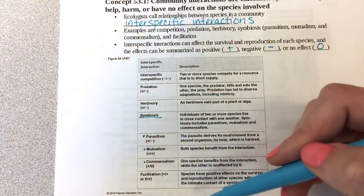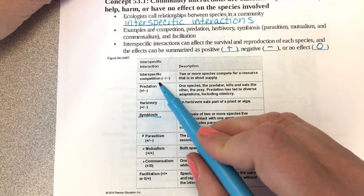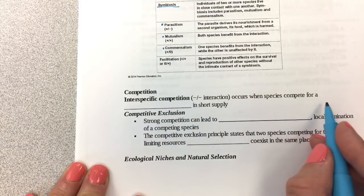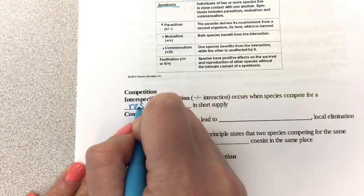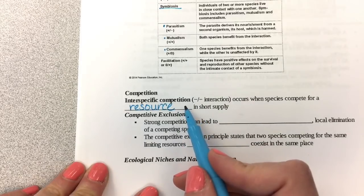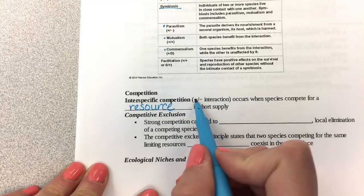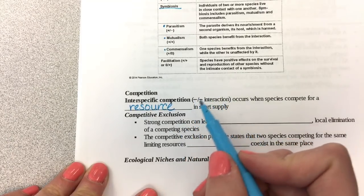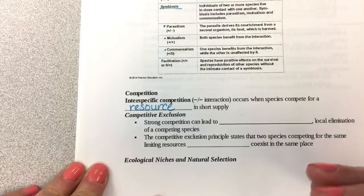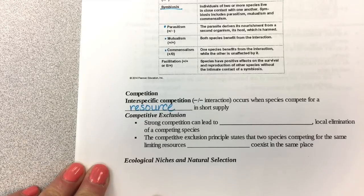This is a neat little table, and we're going to look at each one specifically. We'll start with competition. Interspecific competition is a negative-negative interaction that occurs when species compete for a resource in short supply — typically near carrying capacity.